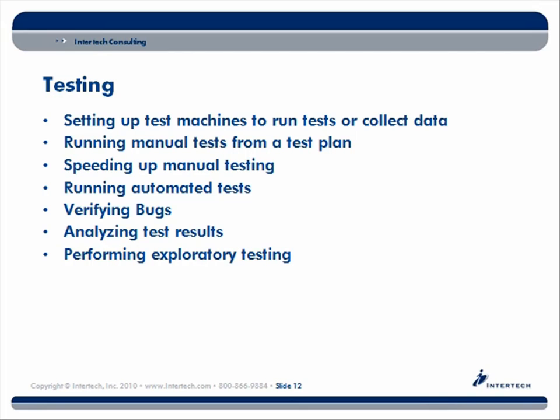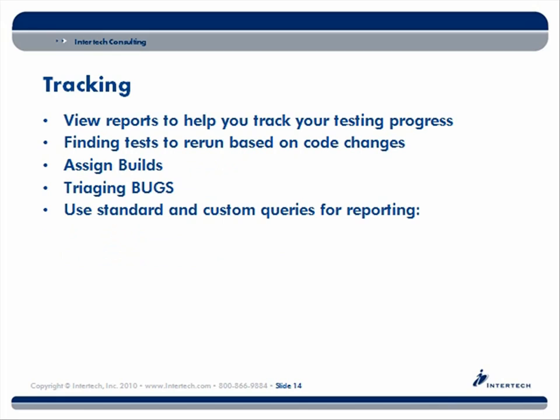We're going to take a peek at running automated tests, though we're not going to get into that too much. We'll also go through the process of verifying a bug and look at some of the test results, and I'll show you a quick and cool feature called exploratory testing. Then we'll look at what the tool provides for tracking — what user stories don't have test cases, what test cases have been run, how many are passing or failing, how you'd prioritize bugs, and assigning which builds your test plan runs against, plus some of the query capabilities.